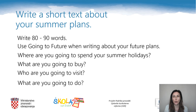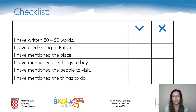Now it's time for your homework. Write a short text about your summer plans — 80 to 90 words. Use going to future when writing about your future plans. Answer the following questions: Where are you going to spend your summer holidays? What are you going to buy? Who are you going to visit? What are you going to do? This checklist will help you: check if you have written 80 to 90 words, if you have used going to future, if you have mentioned the place, the things to buy, the people to visit and the things to do. That would be all for today. Bye-bye.